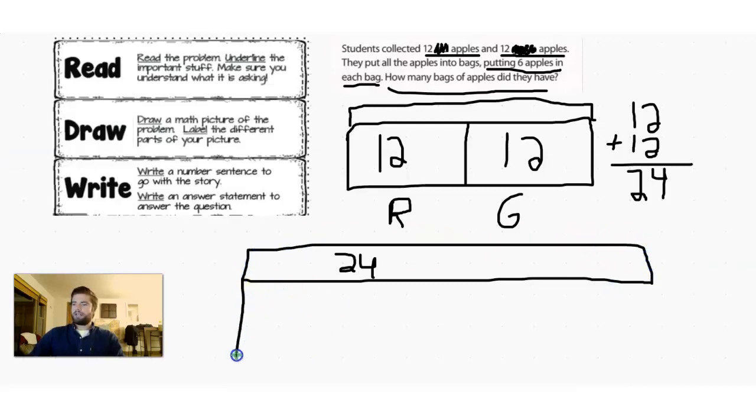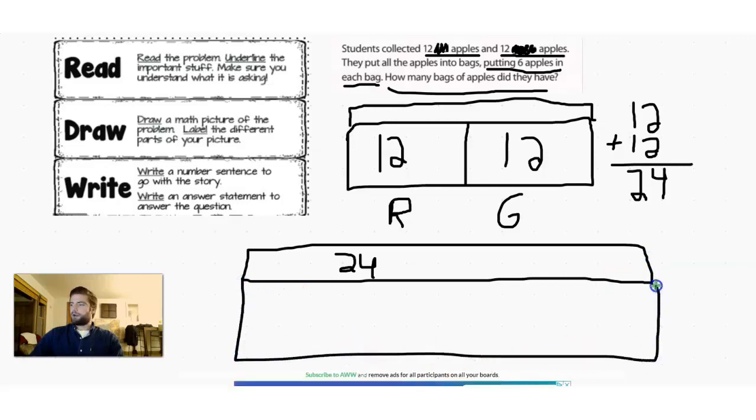24 in the top. And down in the bottom of our tape diagram, we have to figure out how many bags. Okay. So let's count by adding six. Okay. So if we put six apples in that bag, we got one bag there. Six apples in another bag, we have another bag there. Six plus six is 12. So we haven't done all 24 yet. We got to keep going. Let's add another bag of six. Six in this bag.